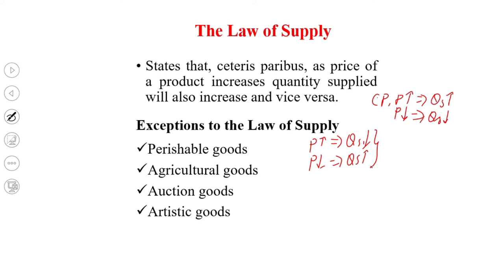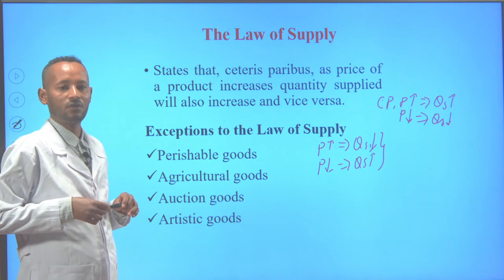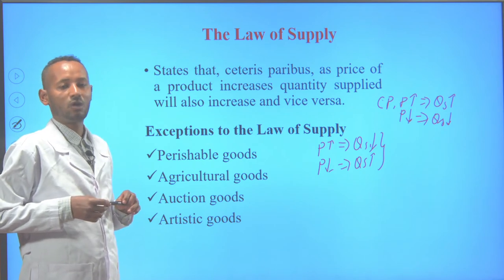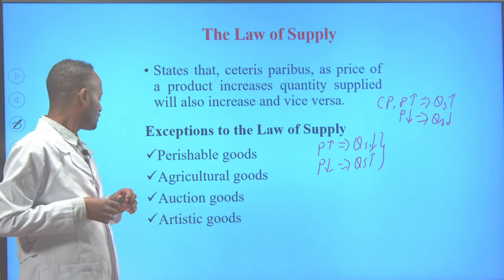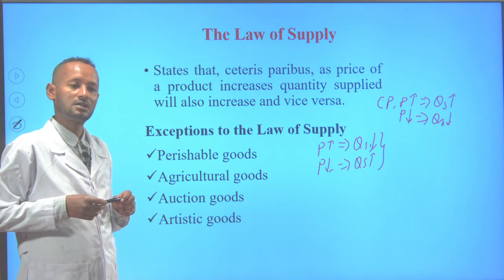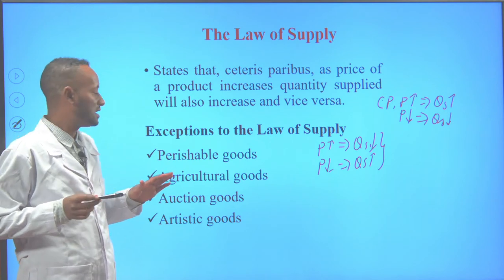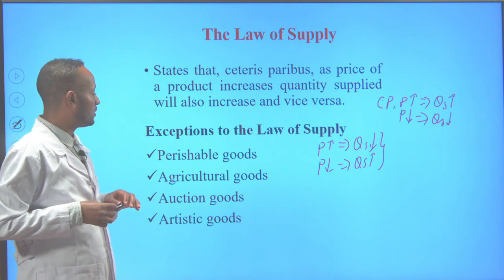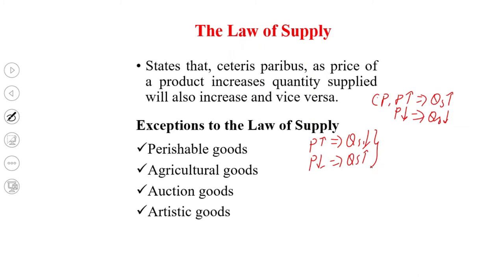Agricultural goods are against the law of supply. That means with increasing price of agricultural commodities, quantity supplied will decline or remains unchanged, and with falling price of agricultural commodities, quantity supplied will increase or remains unchanged. Organizing goods are also against the law of supply. With an increase in the price of such goods, quantity supplied will decline or remains unchanged, and with a fall in price, quantity supplied will increase or remains unchanged.